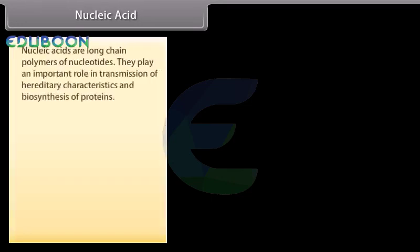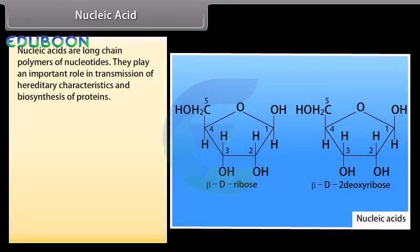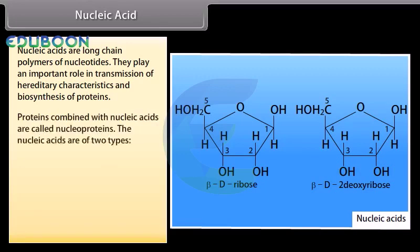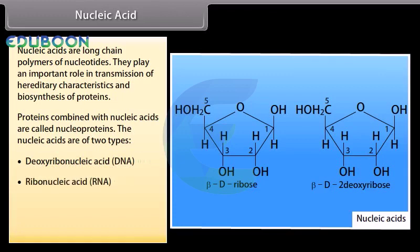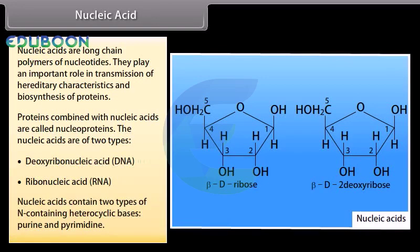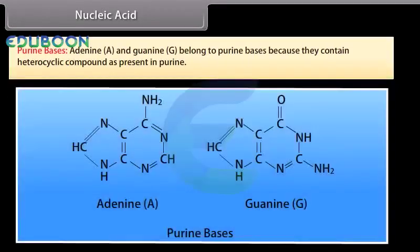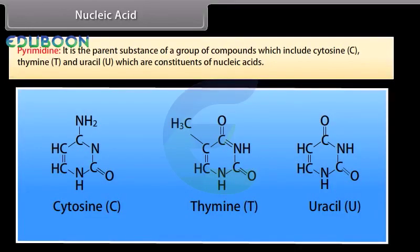Nucleic acids are long chain polymers of nucleotides. They play an important role in transmission of hereditary characteristics and biosynthesis of proteins. Proteins combined with nucleic acids are called nucleoproteins. The nucleic acids are of two types: deoxyribonucleic acid (DNA) and ribonucleic acid (RNA). Nucleic acids contain two types of nitrogen-containing heterocyclic bases: purines and pyrimidines. Adenine and guanine belong to purine bases. Pyrimidine is the parent substance of compounds which include cytosine, thymine and uracil, which are constituents of nucleic acids.